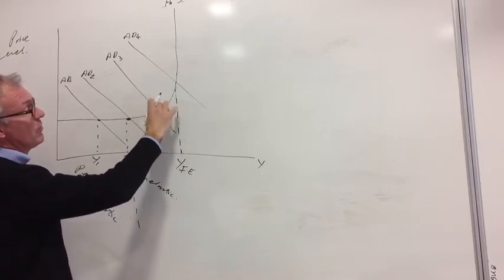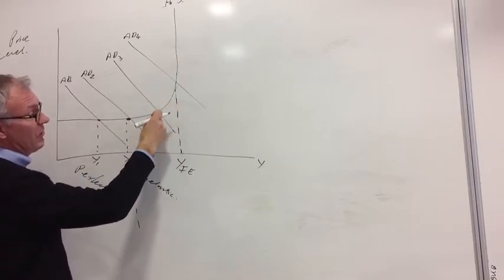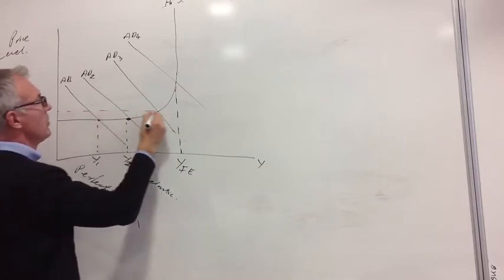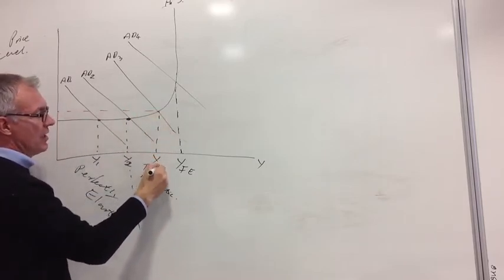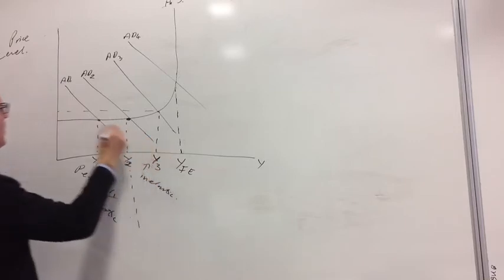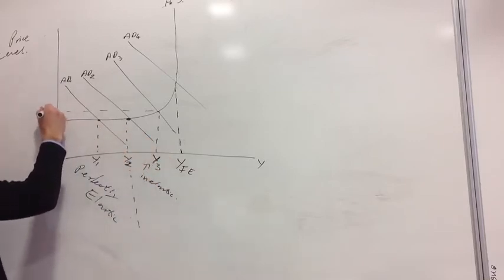So as we move to aggregate line 3, the price level will increase a little bit, and output, yes, increases to Y3. But the price level moves from P1 to P2.